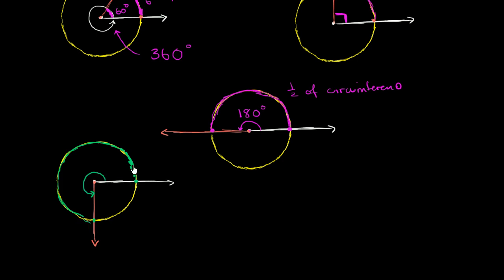It looks like we've gone 3/4 of the way around the circle. So this angle is going to be 3/4 of 360 degrees. 1/4 of 360 degrees is 90, so three of those is going to be 270 degrees.